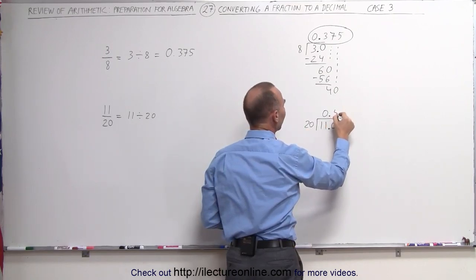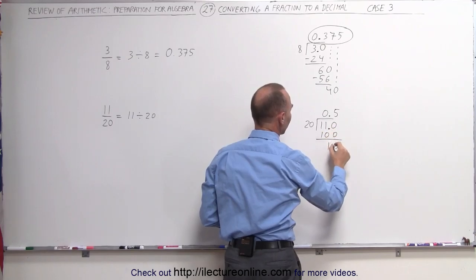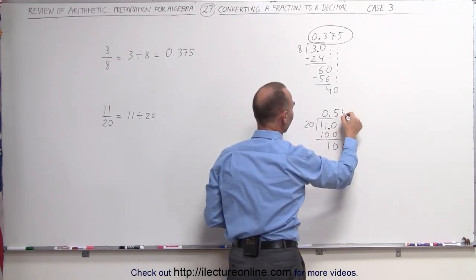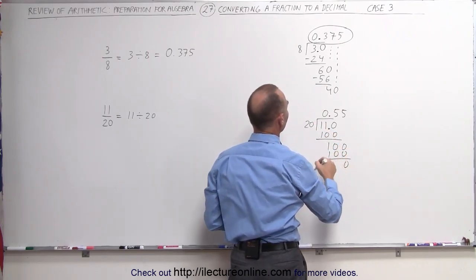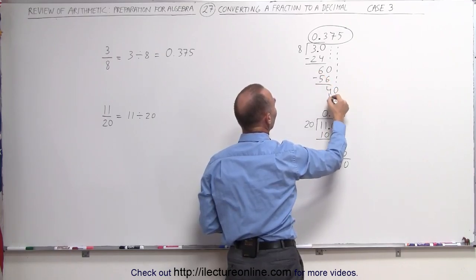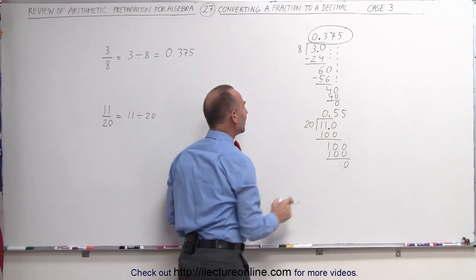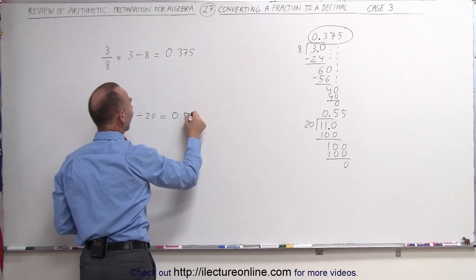20 goes into 110 five times. 5 times 20 is 100, the remainder is 10. Drop down another zero. 20 goes into 100 five times. 5 times 20 is 100, remainder 0. I guess I didn't do the final thing here. 5 times 8 is 40, remainder 0. So we are done. Here we are done. So that means that this can be written as 0.55.